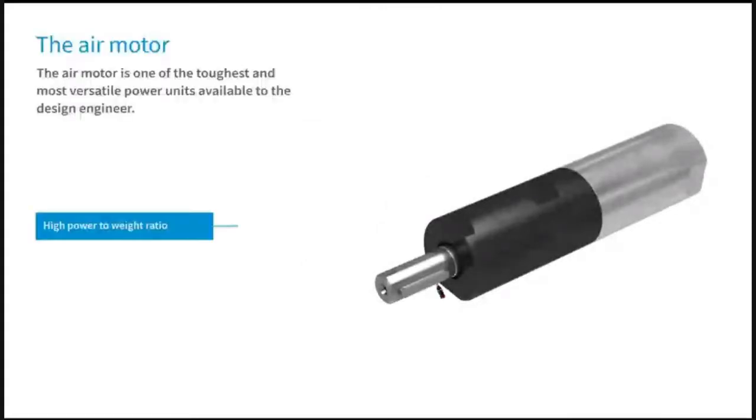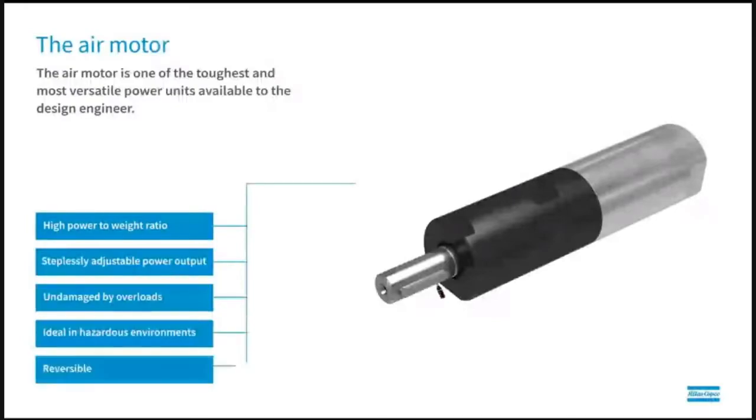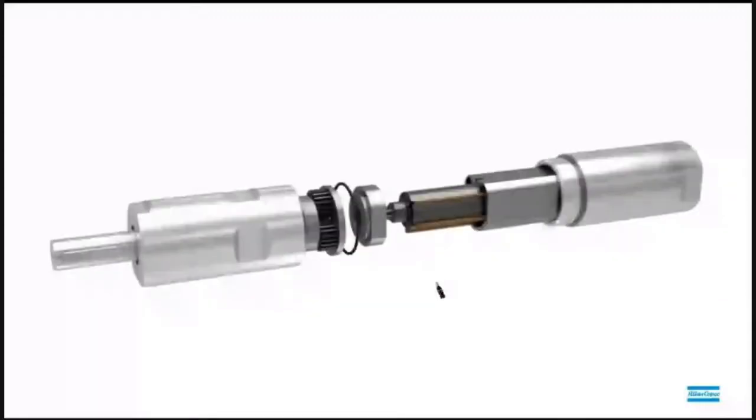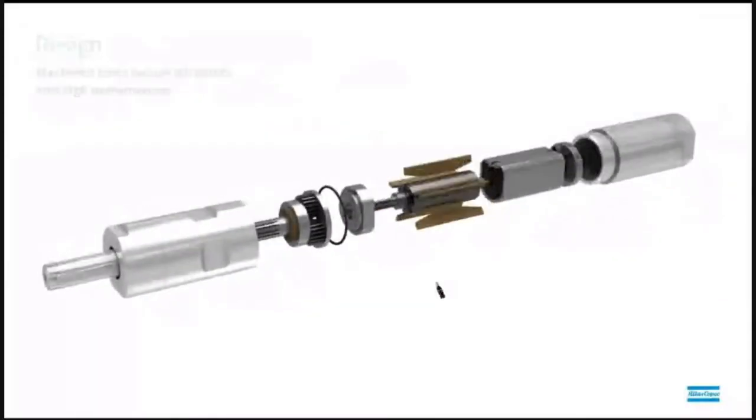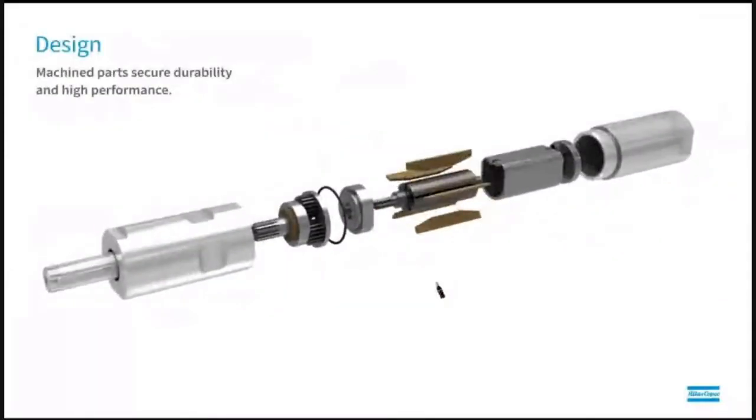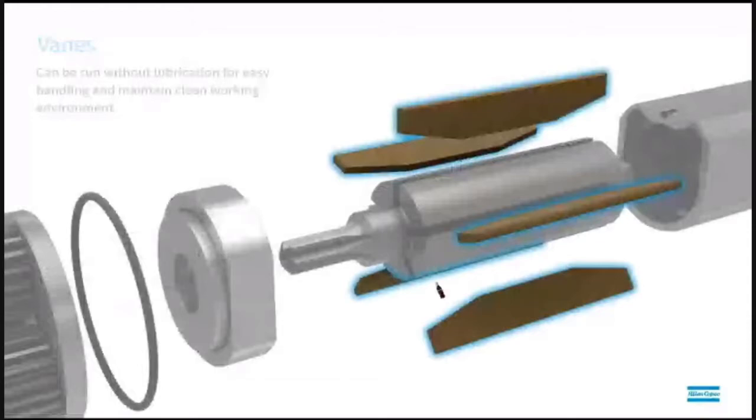The air motor is one. Our LZB line is a full range of compact, high performance vane motors. Machine parts ensure durability and high quality performance. The motors can be run without lubrication for easy handling and to maintain a clean working environment.